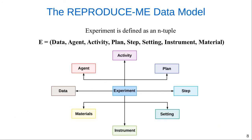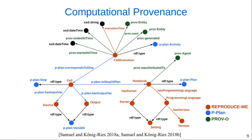In previous work, we have developed the Reproduce.me ontology, which is extended from PROV-O and P-Plan ontologies. Reproduce.me introduces the notion of data, agent, activity, plan, step, setting, instrument, and materials, and thus models the general elements of scientific experiments required for their reproducibility. Work is in progress to extend this ontology to include machine learning concepts important according to our survey. With Reproduce.me, the machine learning pipeline developed through Jupyter Notebooks can be described in an interoperable manner, and we also aim to be compliant with existing ontologies like machine learning schema and MEX vocabulary.